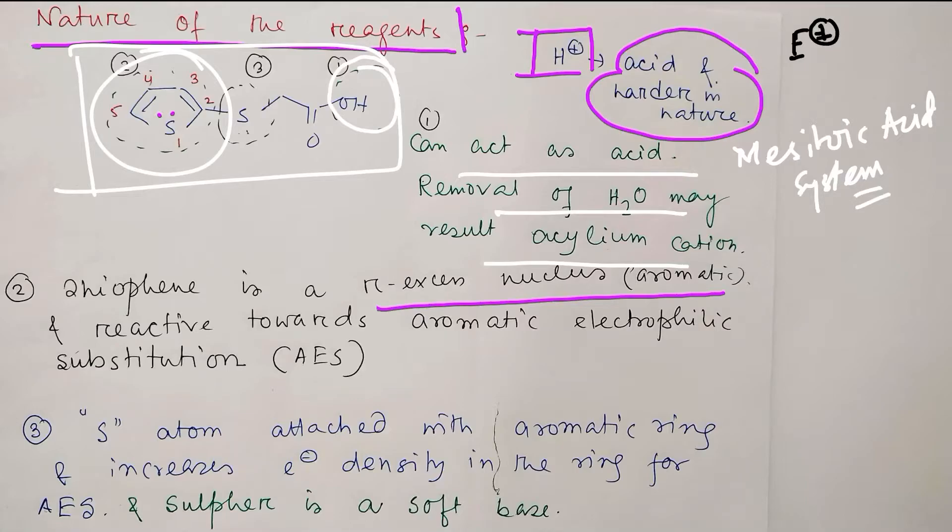What do I mean by the statement pi-excess nucleus? The six pi electrons - two from double bond and one from lone pair - so six pi electrons are distributed over five atoms because it's a five-member ring. That's why this is called pi-excess nucleus, and that is the reason for its enhanced activity for aromatic electrophilic substitution.